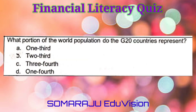Question number twenty-one: What portion of the world population do the G20 countries represent? A. One third, B. Two third, C. Three fourth, D. One fourth.